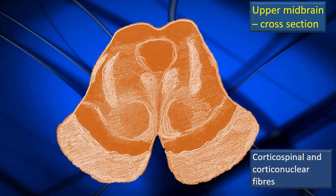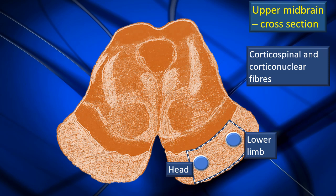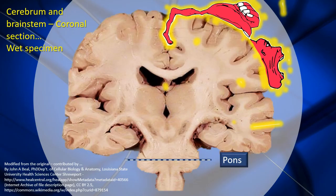This tract has two components: corticonuclear and corticospinal. The corticospinal component is what we will see in the spinal cord; the corticonuclear ends in the brain stem. There is also a clear lamination of the fibers — fibers destined for the head region are located medially, fibers for the lower limb are on the other end, and the rest of the body is in the middle. This lamination pattern is clinically very useful and has been found across various spinal cord levels.